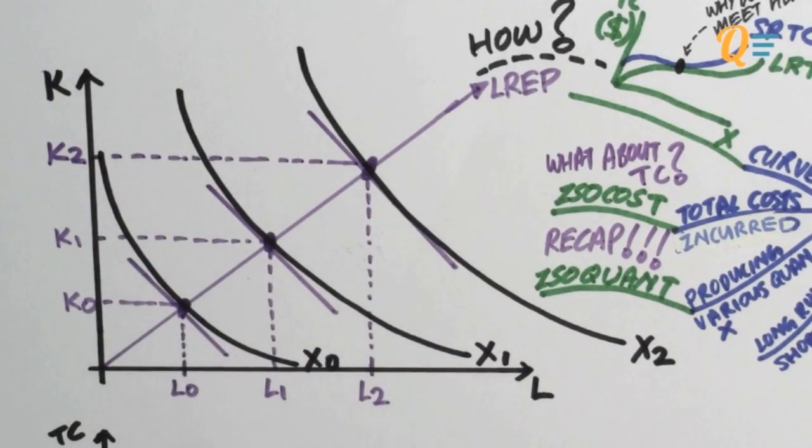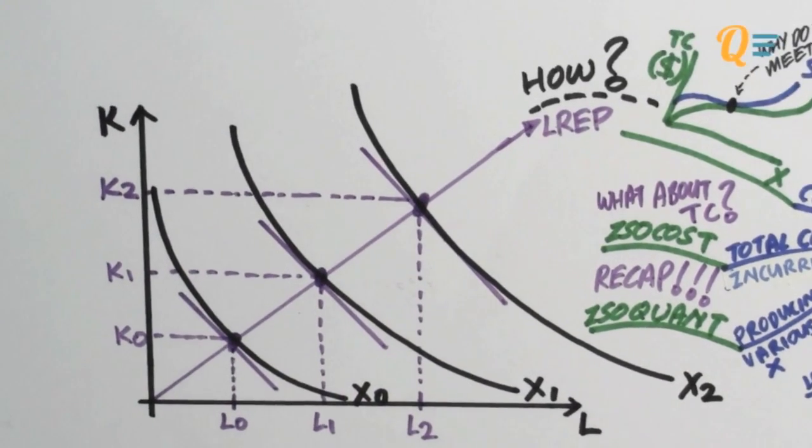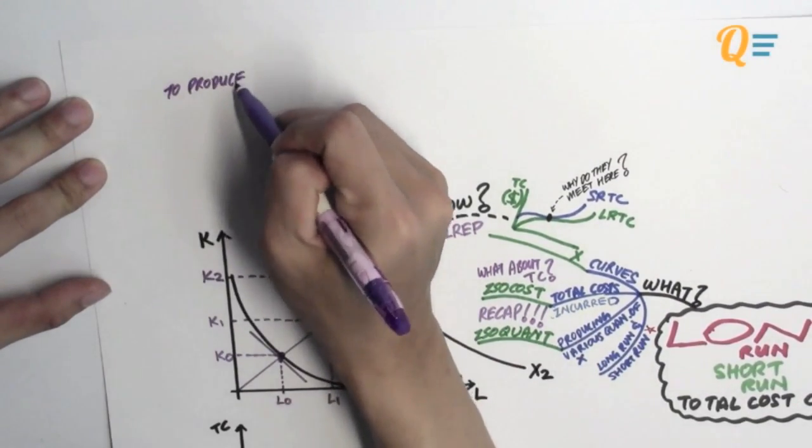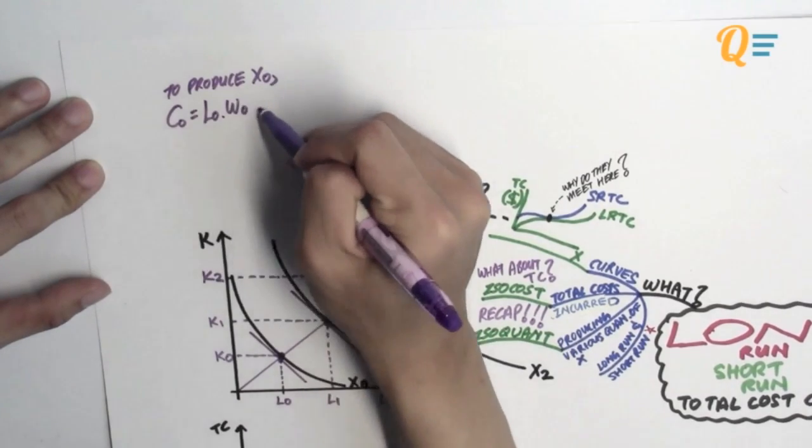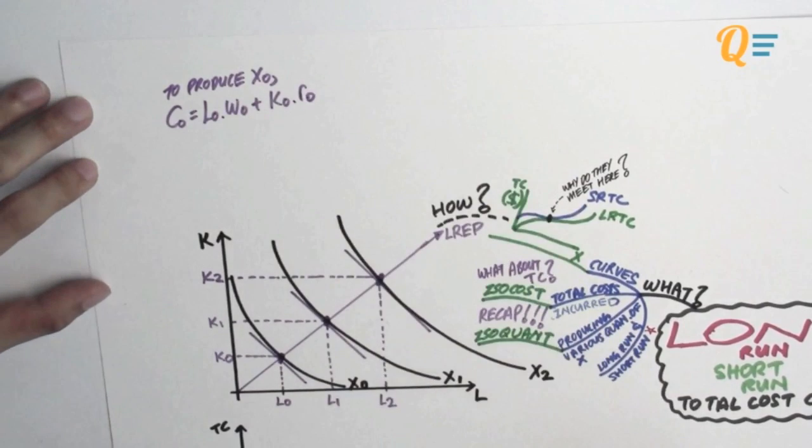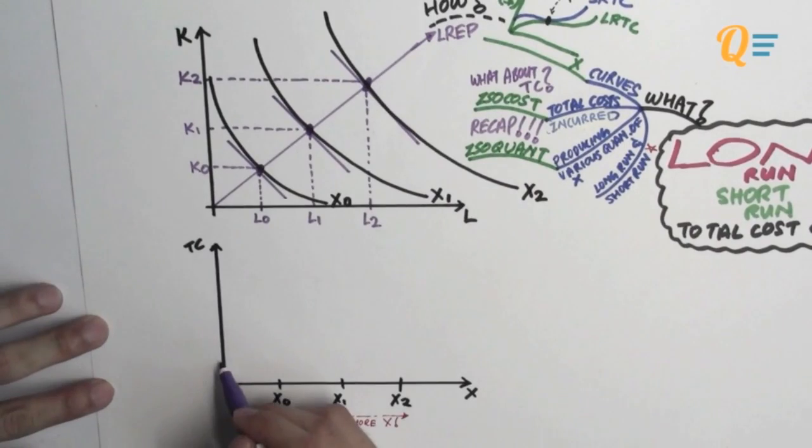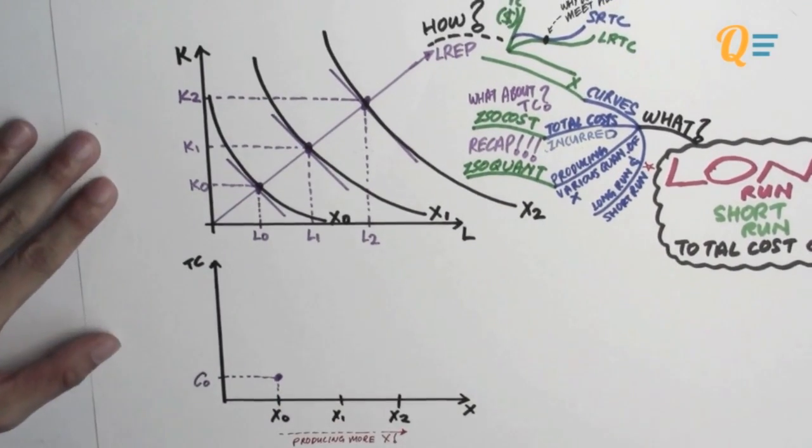So here's how I'm going to find out what is the total cost to produce certain quantities. So to produce X naught, I know that the total cost is going to be the amount of labor multiplied by the wage rate plus the amount of capital multiplied by the interest rate. I hope that's familiar to you. So let's imagine that there are real numbers there so we can find out what C naught is. So we're going to mark out C naught over here for X naught quantities of X produced.